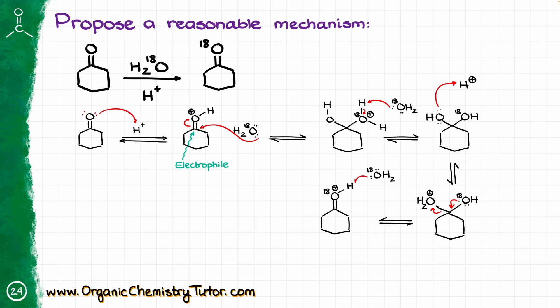This is now going to lose the proton to the environment, giving me my final product, cyclohexanone with heavy oxygen incorporated. And you might be wondering, if every step in this reaction is in equilibrium, how come our molecule just doesn't go back and give us the original cyclohexanone?